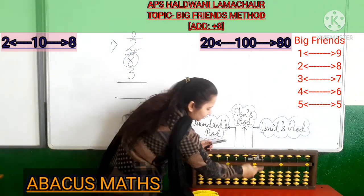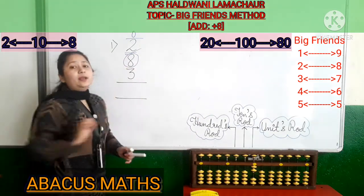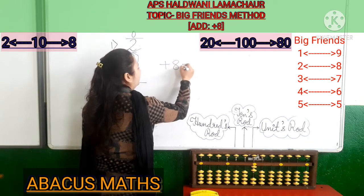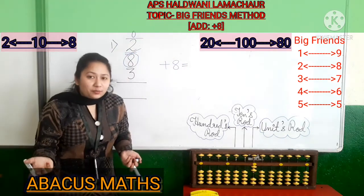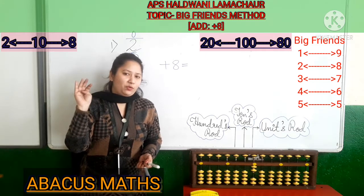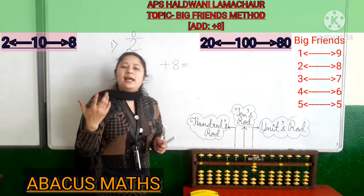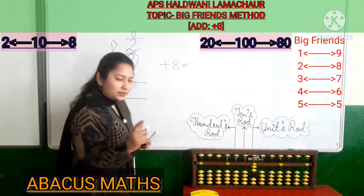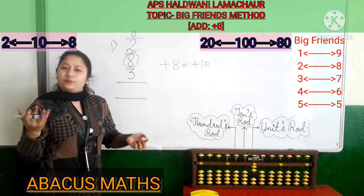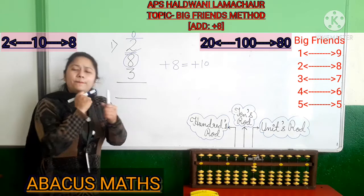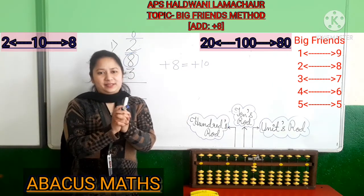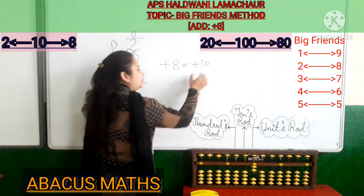Next we have to add 8 in the 1s rod. But we have only 7 beads and we have to add 8 — there is a lack of beads. Whenever there is a lack of beads, you take the help of big friends, because 8 is not in small friends. Small friends only has 1, 2, 3, 4. So we take the help of big friends. For adding 8, the first number which you will add is 10, because 10 is the best friend of big friends.